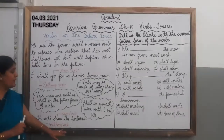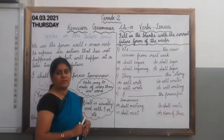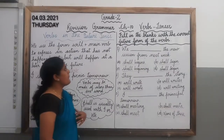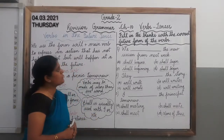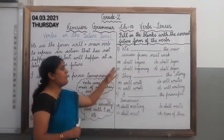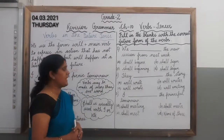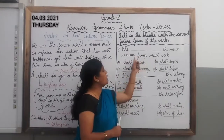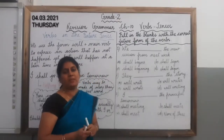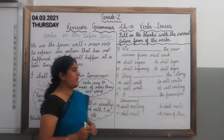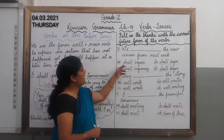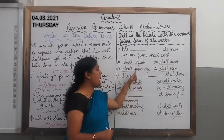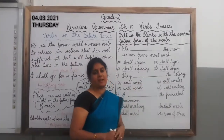Now you will understand the MCQ-based question given on this topic, that is verbs in the future tense. Fill in the blanks with the correct future form of the verbs — you have to choose the correct form of future tense. The first question is: 'We ___ the new session from next week.' The options are: (A) shall begins, (B) shall begin, (C) shall begin, or (D) shall begin. Which is the correct answer?